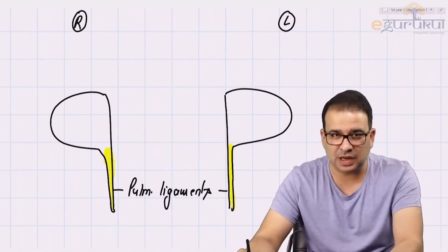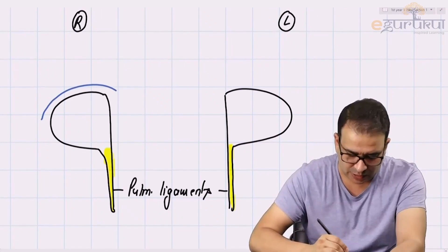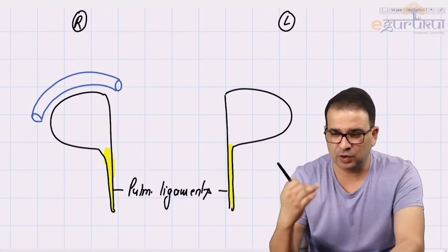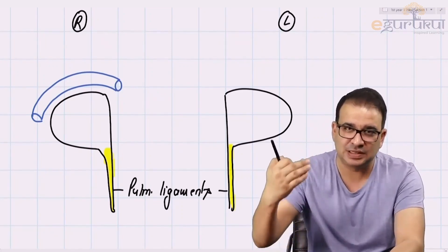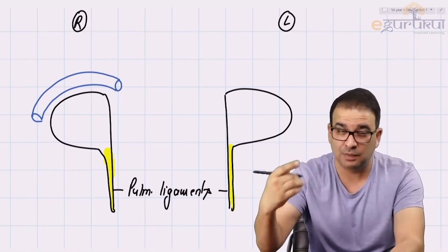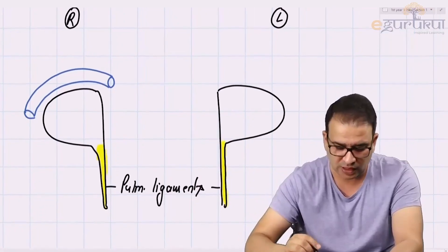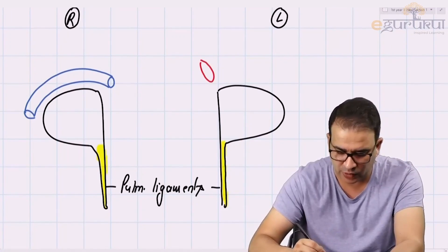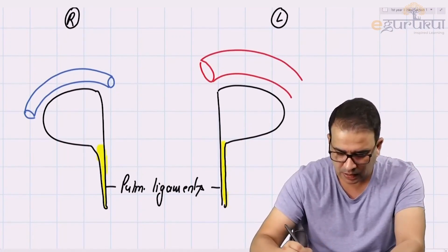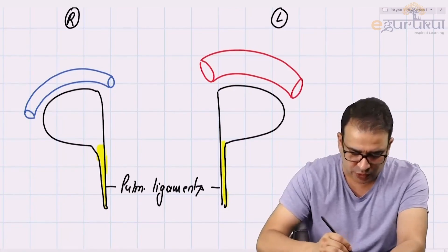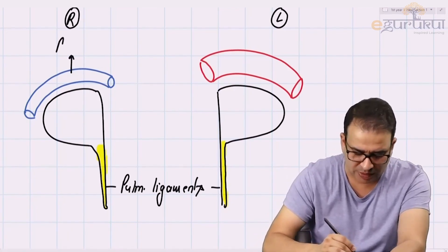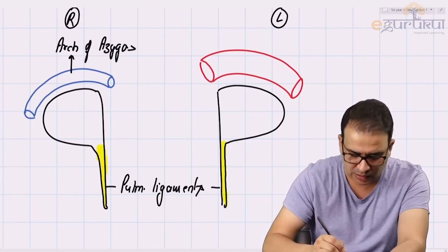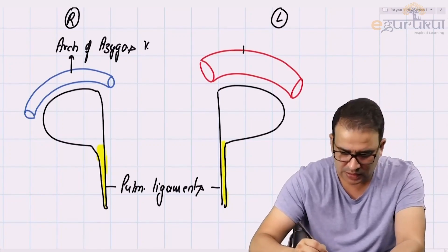The structure present above the right root of lung is the arch of the azygous vein. The azygous vein is on the right side, and it drains into the superior vena cava. That arch of azygous vein is seen above the right root of the lung. An important structure present above the left root of the lung is the arch of the aorta. This is one important relation to remember: arch of azygous vein on the right, and arch of aorta on the left.